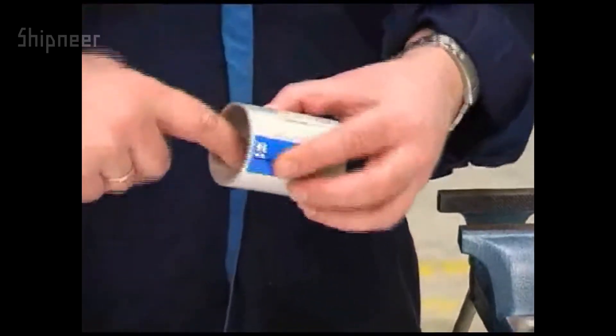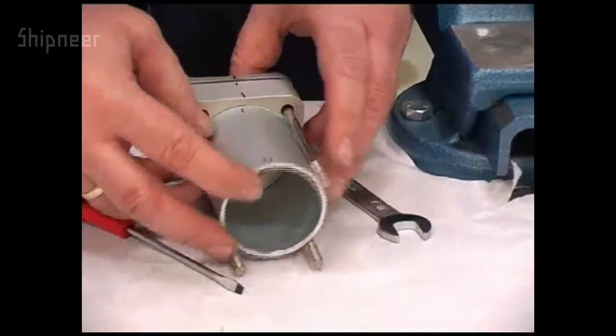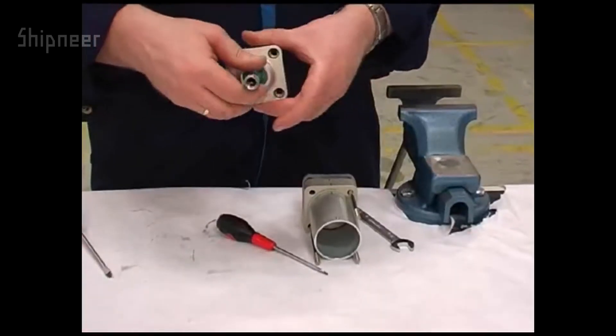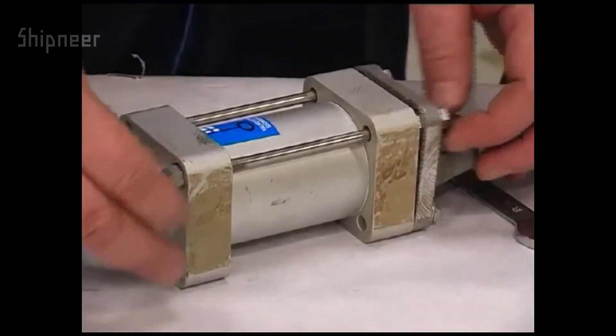Lubricate the cylinder housing with grease. Put the rod and the cylinder back together. Use the position marks to align correctly. Tighten the four bolts.